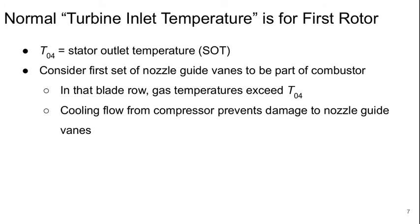What we've been thinking about is our normal turbine inlet temperature — this is actually the temperature into the first rotor, because T04 is the stator inlet temperature. T04 would also be the stator inlet temperature if there was no film cooling, but there normally is film cooling in turbines. So we basically consider the first set of nozzle guide vanes, or the stators, to be part of the combustor. In that blade row, the gas temperature exceeds T04, but cooling flow from the compressor prevents damage to the nozzle guide vanes.